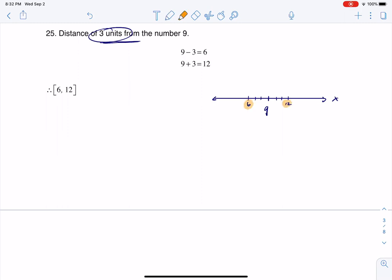I'm looking for any numbers between six and 12 inclusive, which is why you see me putting the brackets here, or if I was on the number line, I'd put closed dots. Any number in that interval is within three units of the number nine. All right, thanks so much, bye.